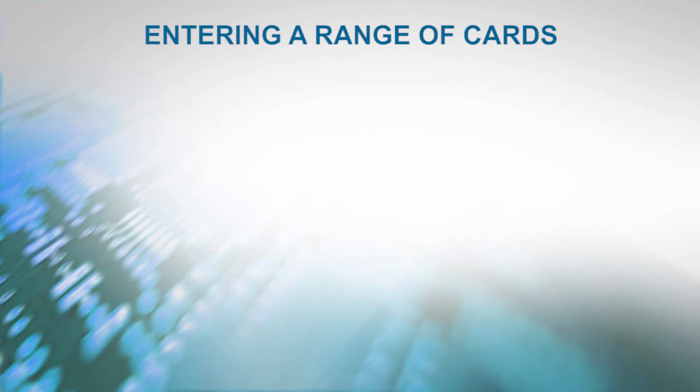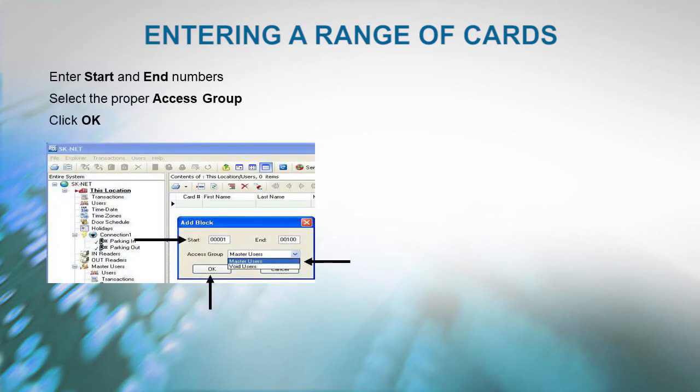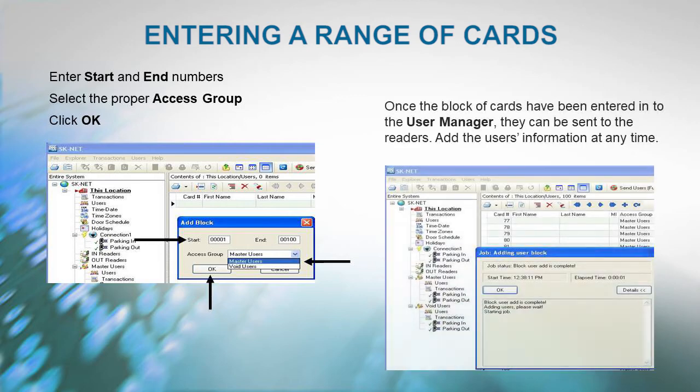Entering a Range of Cards: First, enter Start and End numbers. Select the proper Access group. Click OK. Once the block of cards has been entered into the User Manager, they are ready to be sent to the readers. You can add the user's information at any time.